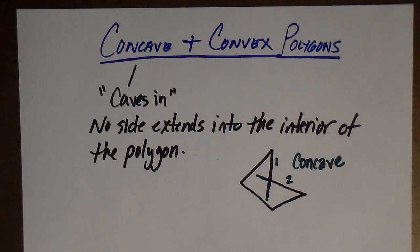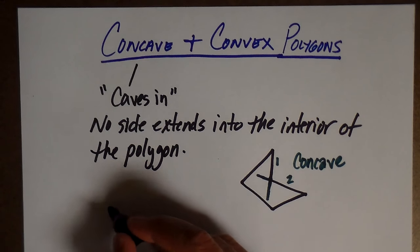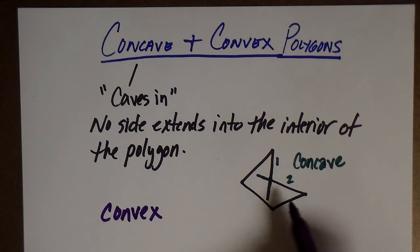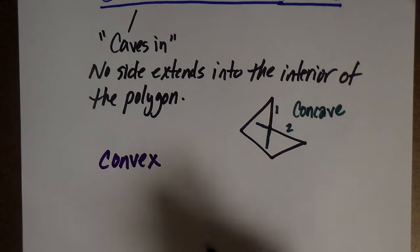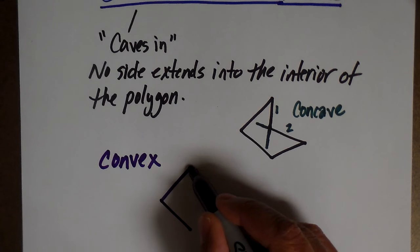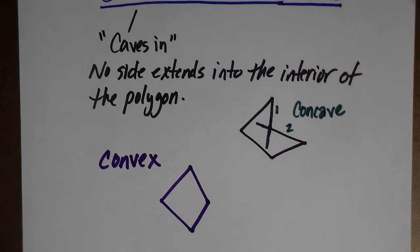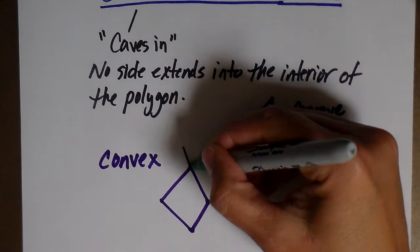That's the easiest way to determine if it's concave or convex. If I want to look at a convex polygon, then what that means is it's not going to cave in like this. So if I were to draw, for example, a polygon that looked like this, an ugly old trapezoid.